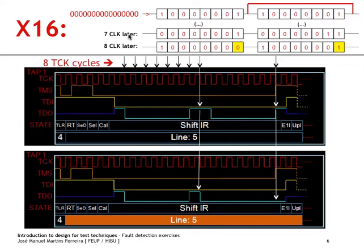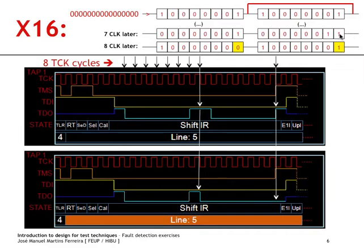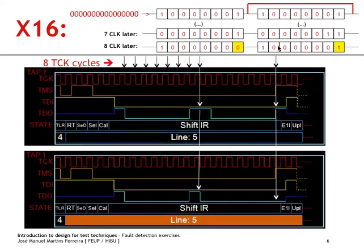Seven test clock cycles later, the first seven zeros have been shifted into the instruction register of the device on the left, and the 1 bit has moved to a new position. At this point there is still no fault detection condition because we have a 1 at this TDO and a 1 at this TDO. However, in the following clock cycle this bit moves forward and the first zero comes out, while the word has transferred through these positions.